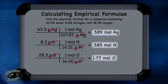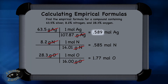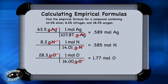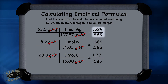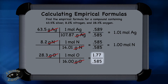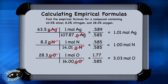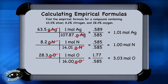Next, divide all the molar amounts by the smallest molar amount to get the subscripts for the empirical formula. There are two similar amounts — 0.589 and 0.585 — but 0.585 is smaller, so use that. Dividing: 0.589 divided by 0.585 equals 1.01; 0.585 divided by 0.585 equals 1; and 1.77 divided by 0.585 equals 3.03. These numbers — 1.01 and 3.03 — are close enough to round and use as subscripts.